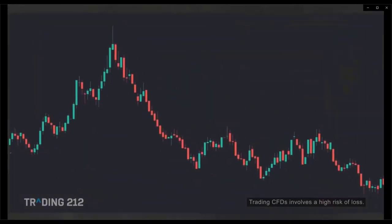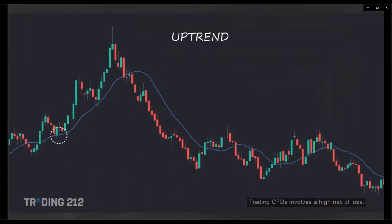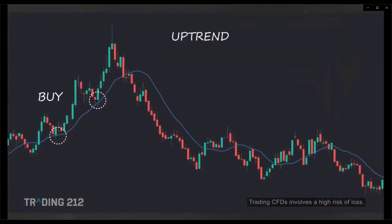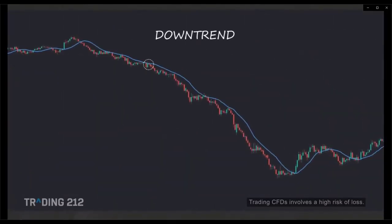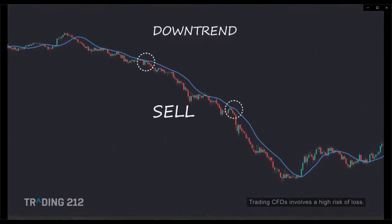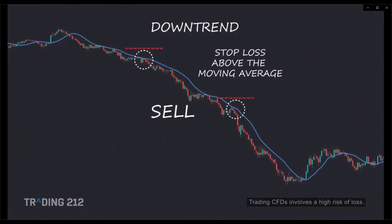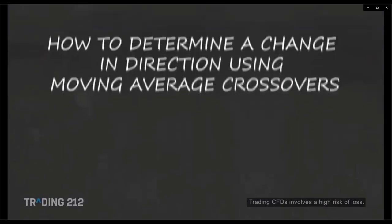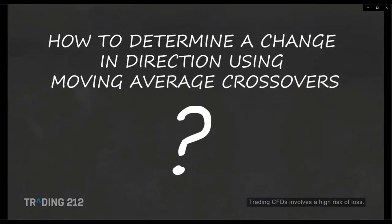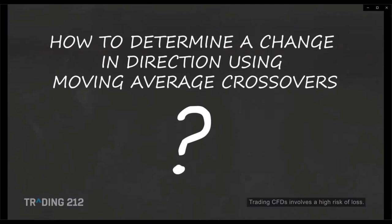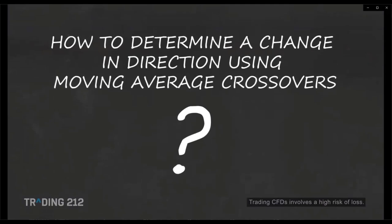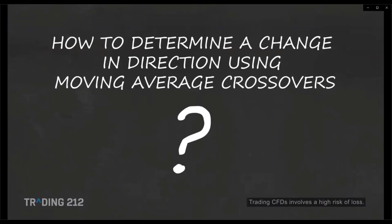When the price is above the moving average and it acts as support, you could buy and enter a long position when the price pulls back to the moving average line, then place your stop loss underneath. Conversely, when price is below the moving average and it acts as resistance, you could enter a sell order when price retraces to the moving average line and place your stop loss above it. Moving averages can be used alone or in combination with other moving averages — trading crossovers between two MAs of different periods.